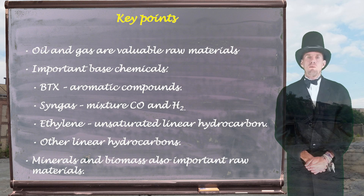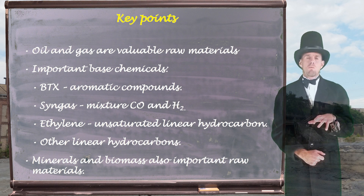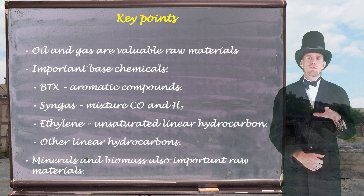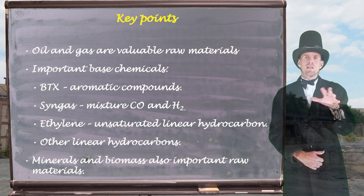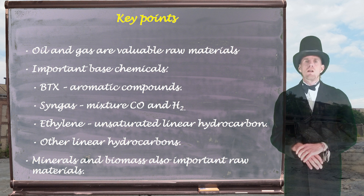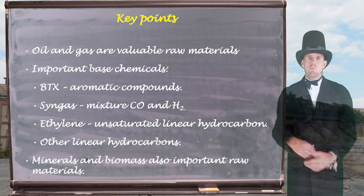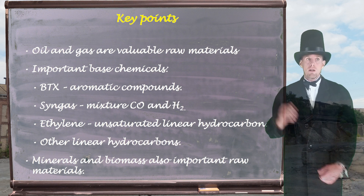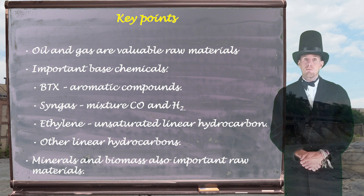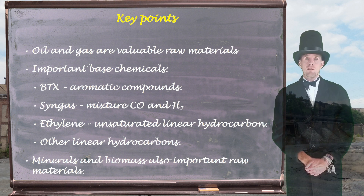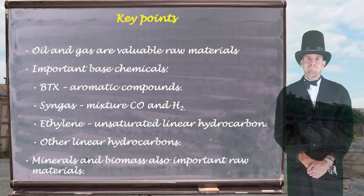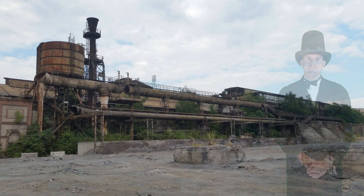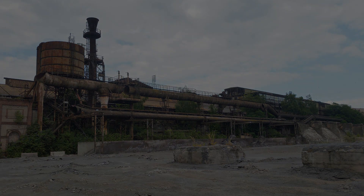To summarise, this part of the lecture aimed to show how raw materials transition into finished products and the food chain that exists in between. We've identified some very important processing routes: the benzene, toluene, xylene route; the synthesis gas route; the ethylene route; and routes due to other linear hydrocarbons. We've also seen that alongside crude oil, natural gas, and coal, we have minerals and biomass as important raw materials for the chemical and process industries.